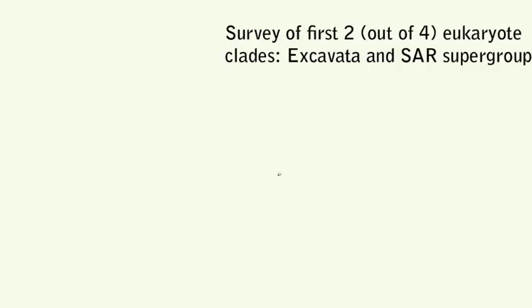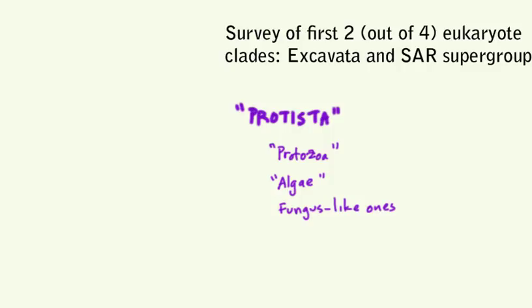Back in the day we were taught that there were four eukaryotic kingdoms—plants, animals, fungi, and the protista. This last kingdom, the protists, was divided into the protozoa, the algae, and some mold-like things that didn't qualify to be real fungi, and this included the water molds and slime molds.